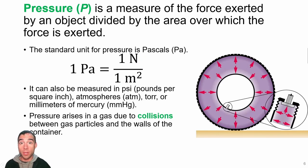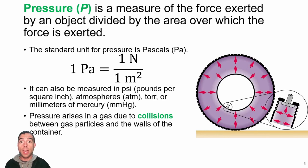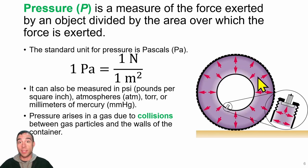Other common pressure units include pounds per square inch (psi) like your car tires, atmospheres like the pressure we live in every day, or TOR and millimeters of mercury used to measure blood pressure. Pressure comes about because of collisions between the gas particles and the wall of the container — like in a car tire, where air particles crash against the inside wall, giving rise to pressure.